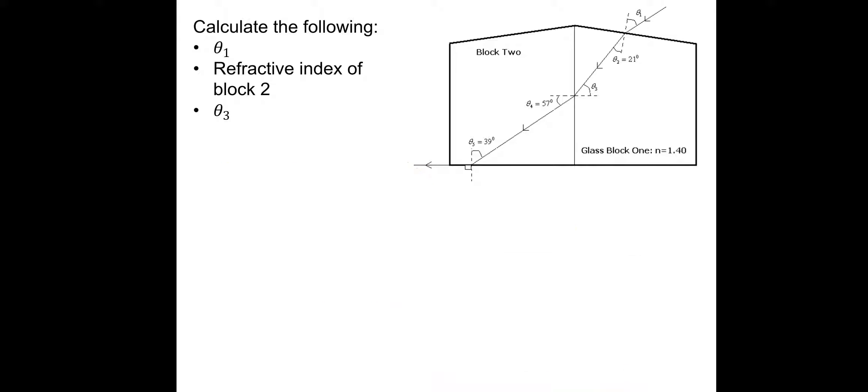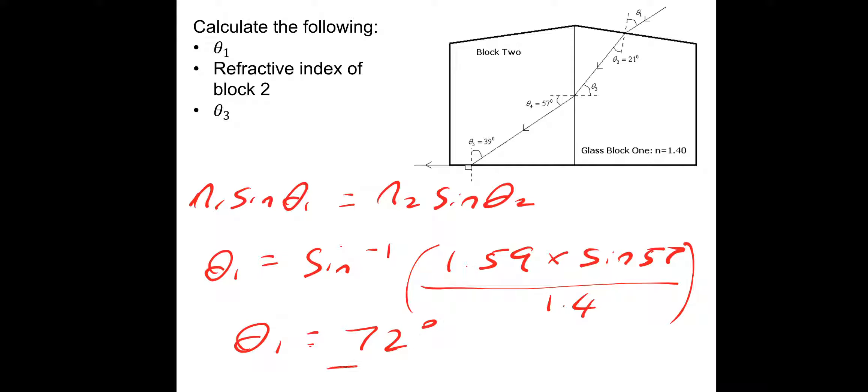And then finally, let's find theta 3. So again, it's an application of Snell's law. So N1 sine theta 1 equal to N2 sine theta 2. So we need theta 1. So theta 1 is equal to inverse sine, and it's N2 sine theta 2 divided by N1. So N2 is the refractive index of block 2 because that's the second material. So that would be 1.59, which we just calculated. Multiply it by sine of the angle, so that would be sine 57, divided by N1. So N1 in block 1 is 1.4. So that gives theta 1 equal to 72 degrees. Hopefully that went okay.